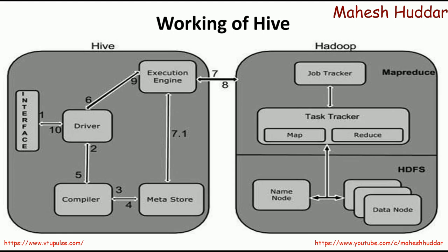Now we will see how Hive works. First, the user writes HiveQL queries with the help of either the web UI or the command line. Once the queries are written, they are given to the driver. The driver — which may be JDBC or ODBC — sends those queries to the compiler to check their syntax. If the query is syntactically correct, the compiler asks the metastore for the database name, table name, column names, column types, and so on. If everything is fine, the compiler sends the query back to the driver indicating the query is valid and execution can begin.